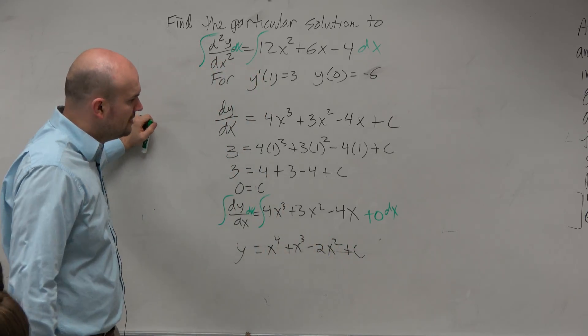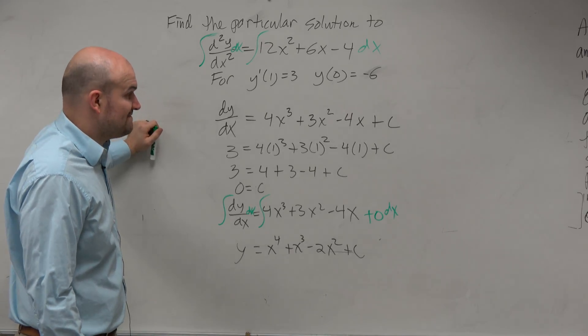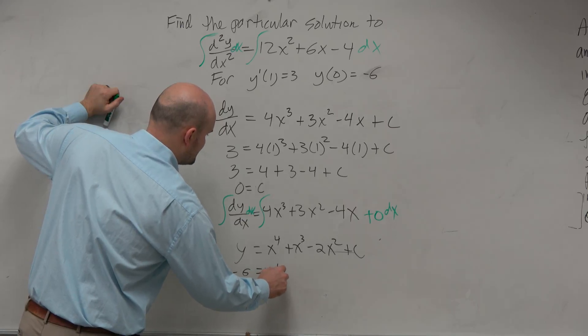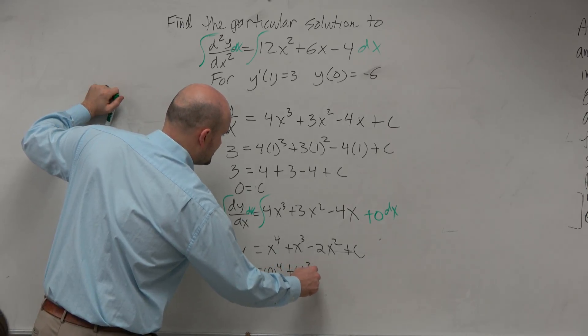And now we can use our final condition. Negative 6 equals 0⁴ plus 0. And you don't really need to show this.